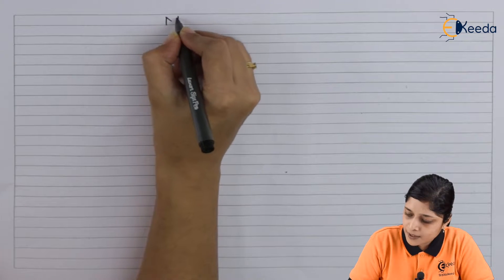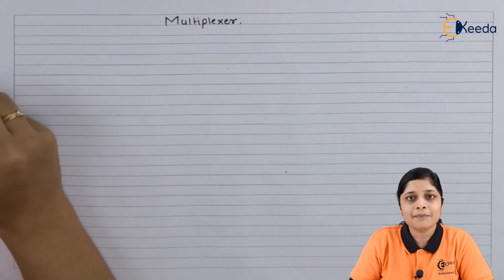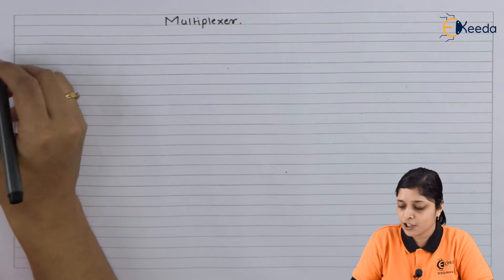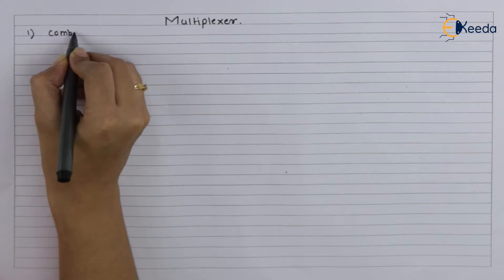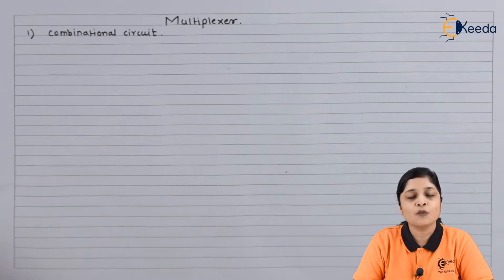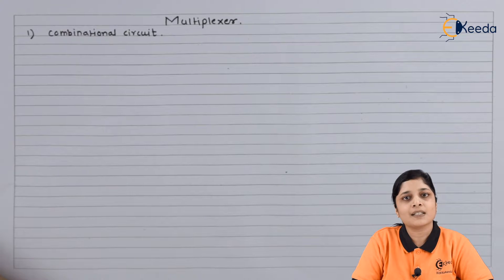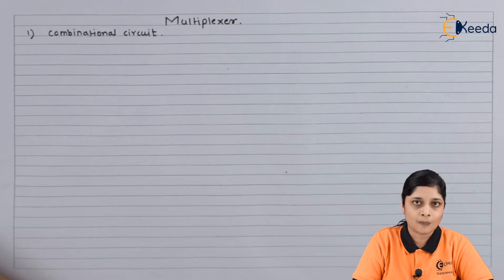What is a multiplexer? A multiplexer is a combinational circuit. Now what is the meaning of combinational circuit? Combinational circuit is a circuit in which output depends on present input only.